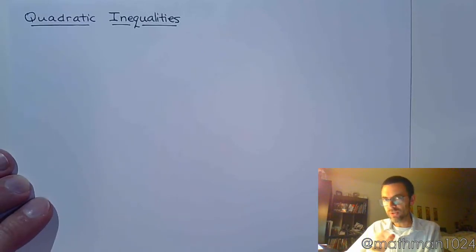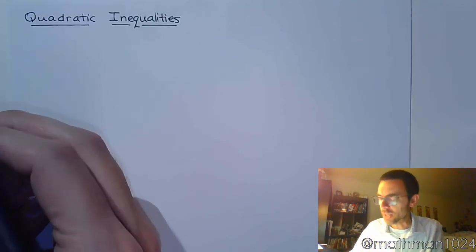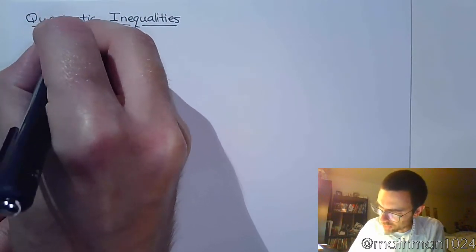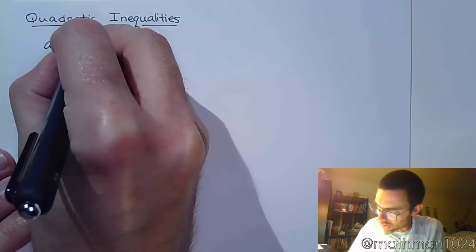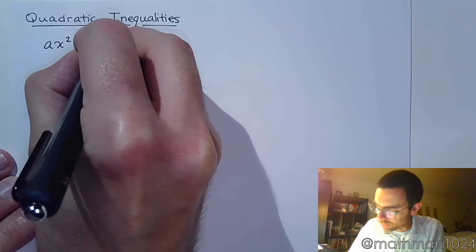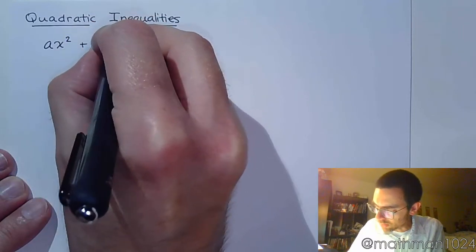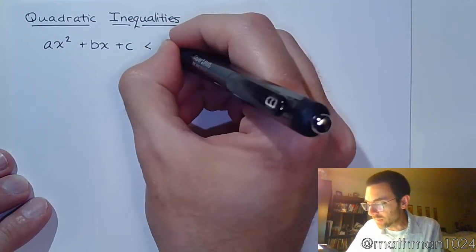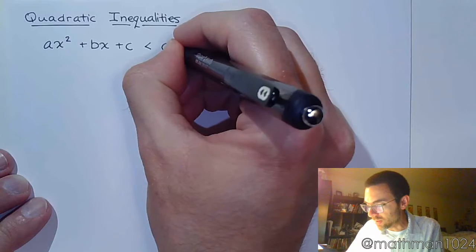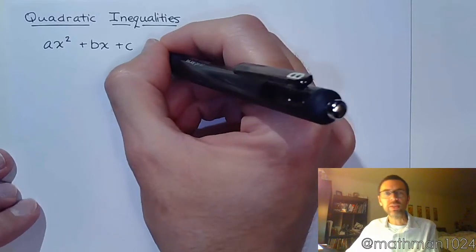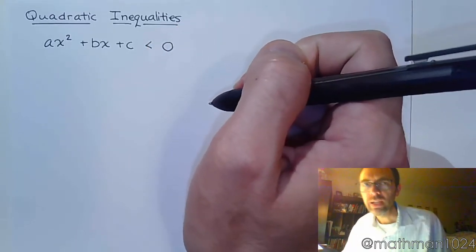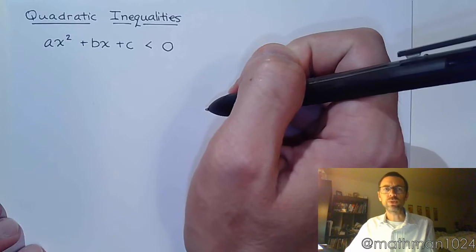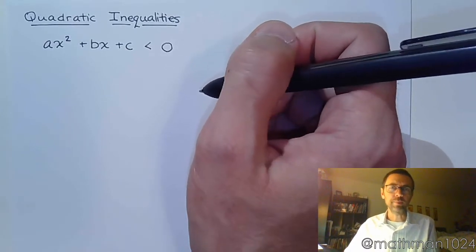Let's first talk about what a quadratic inequality is. Naturally, it's going to be something that looks like a quadratic: ax squared plus bx plus c, and let's say less than zero. Now, this less than could also be greater than, less than or equal to, or greater than or equal to — it just has to be an inequality.